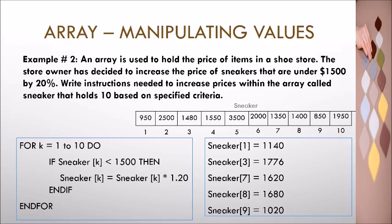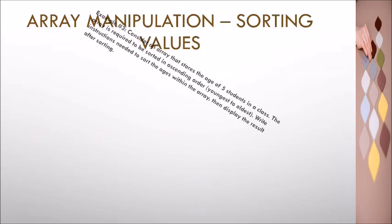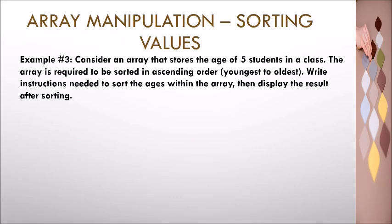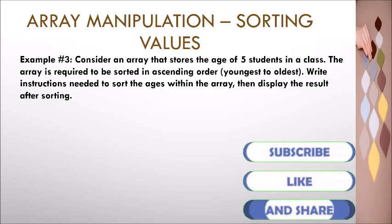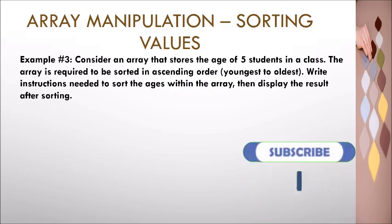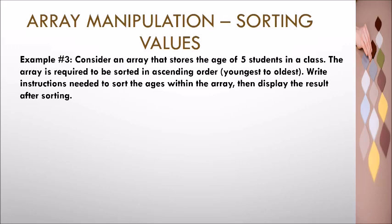Example 3 — Array Manipulation: Sorting Values. Consider an array that stores the ages of five students in a class. The current content of the array should be sorted in ascending order from youngest to oldest student. Pseudocode instructions are required to enable the sorting of the age array, after which the array content should be displayed.